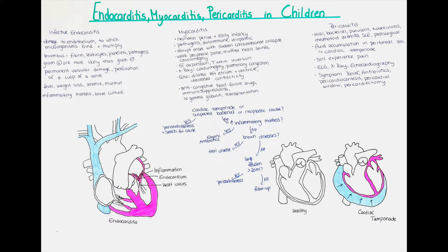Let's talk about the pathogenesis. Usually the endocardium is intact and so protected from microorganisms lodging to it and colonizing it. However sometimes an injury to the endothelial surface occurs, for example due to hemodynamic or mechanical stress, which leads to the exposure of the underlying tissue and damage to the endothelium, and a clot forms. This clot or vegetation is the area where microorganisms bind to and multiply.